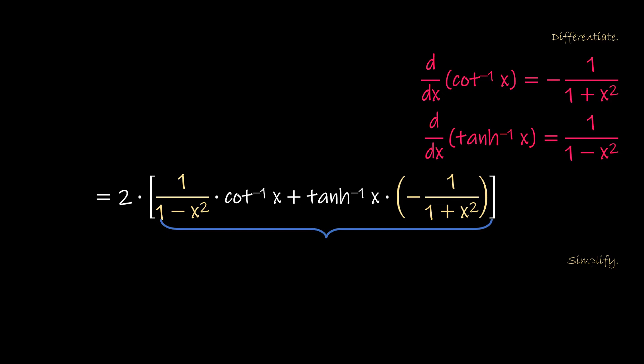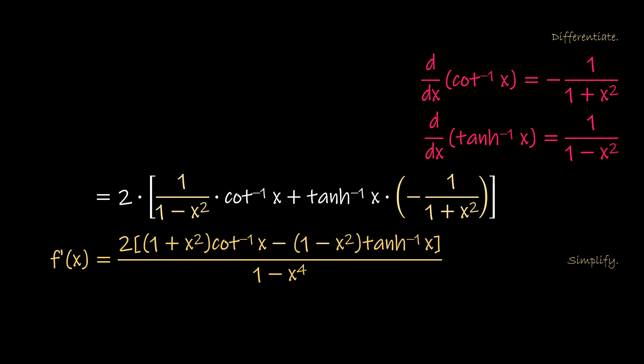Using the LCD method. Therefore, f prime of x equals 2 times the quantity of 1 plus x squared times the inverse cotangent of x, minus 2 times the quantity 1 minus x squared times the inverse hyperbolic tangent of x, all over the quantity 1 minus x raised to the 4th power.